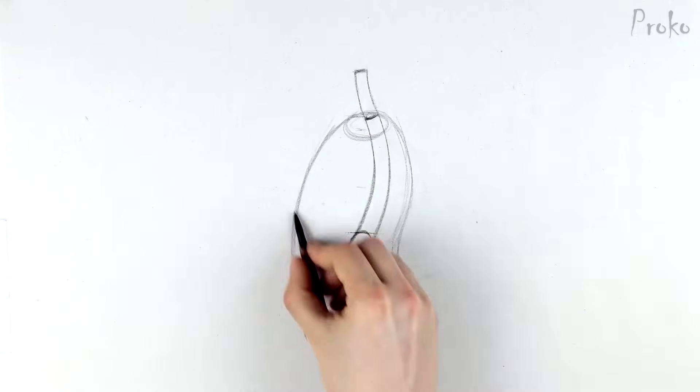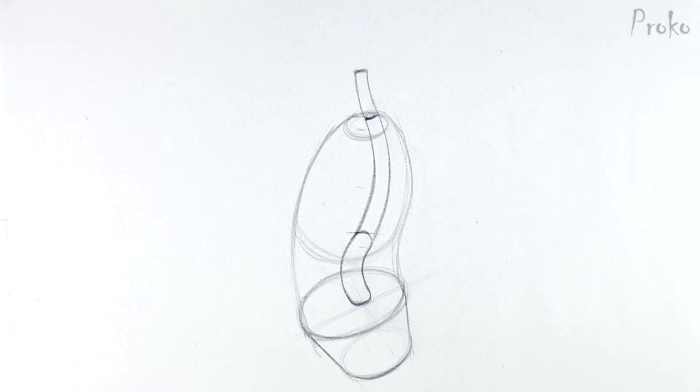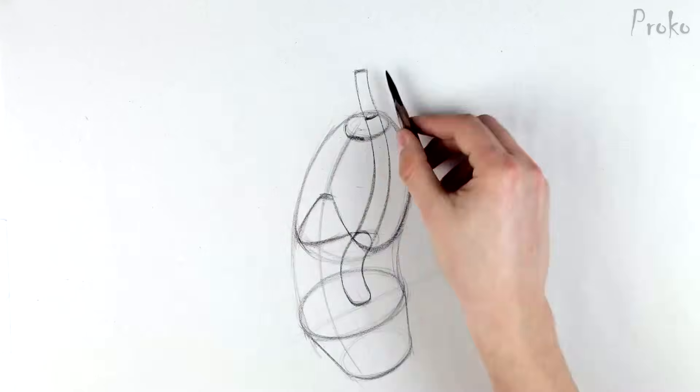In the next lessons on the pelvis and ribcage, I'll show you how to construct more descriptive volumes. For now, you can just stick to a cylinder for the pelvis, and an egg-like shape for the ribcage.